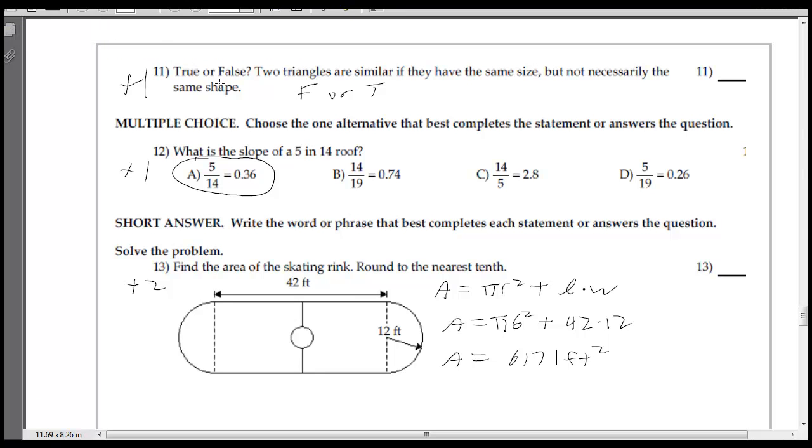And on 11, again, this is a horrible question. It says if two triangles are similar, they have the same size, but not the same shape. Well, obviously, if they're similar, they have the same shape, but not the same size. But if they do have the same size, exactly the same size, that means they have the same three sides are the same. They have the same shape, too. So I accepted everything for that.